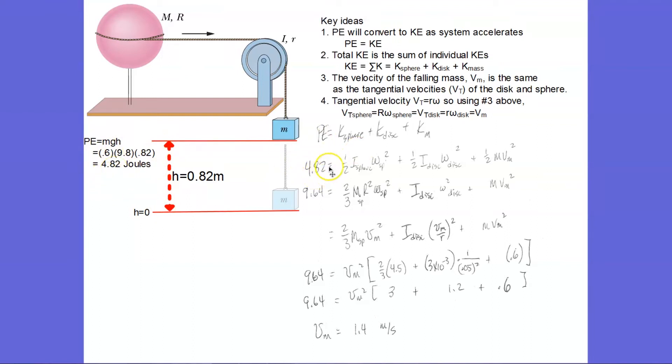So that's my number here. Then kinetic energy of a rotating object is one-half i omega squared. So I put little subscripts for sphere here. And for the disk, one-half i omega squared with subscripts disk. And then linear velocity of the falling mass is just one-half mv squared.